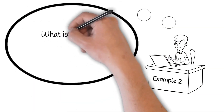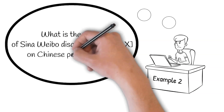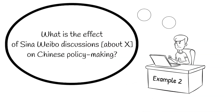Let's try this: 'What is the effect of Sina Weibo discussions about X on Chinese policymaking?' The question is still broad, but we're now moving in a much clearer direction. We know we will be studying media content on a specific platform, Sina Weibo, on a clearly defined topic. Depending on how we select that topic, we might already be able to identify specific policymaking documents to examine. For instance, we could ask how trending hashtags on food safety issues during a particular time period compared to the health and safety policies released in the immediate aftermath — a much more manageable project.